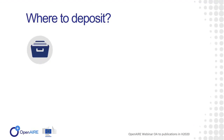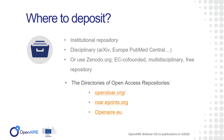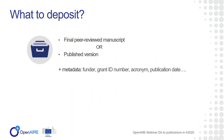No matter if you go for an open access journal or not, you should always deposit a version of your publication in a repository. Most institutions and universities have a repository for publications, and there are also disciplinary repositories. If you do not find an institutional or disciplinary repository that fits, you can use Zenodo — co-funded by the EC, free to use, multidisciplinary, and very easy to use. If you're looking for a repository, you can go to OpenDOAR.org, which provides a list of open access repositories, and you can also consult OpenAIRE for compliant repositories.